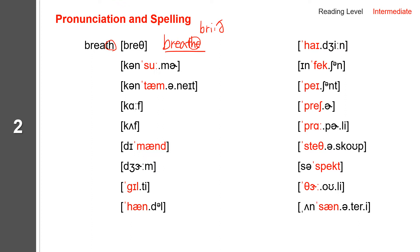The next one: consumer. Consumer spells C-O-N-S-U-M-E-R. Consumer. And next one: contaminate. Contaminate has four syllables and the stress is on the second syllable. It spells C-O-N-T-A-M-I-N-A-T-E. Contaminate.